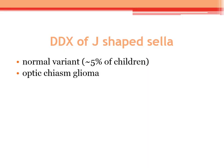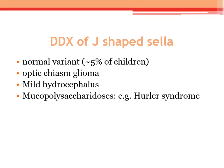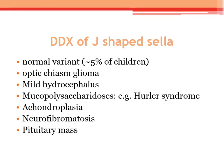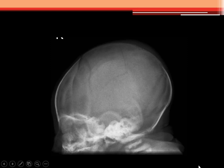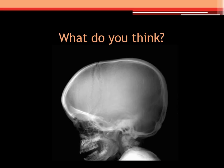There is an abnormally shaped sella, called a J-shaped sella. This is very important. The differential includes: normal variant, optic chiasm glioma, mild hydrocephalus, mucopolysaccharidoses of all types, Hurler syndrome, achondroplasia, neurofibromatosis, and pituitary mass. Should we leave the patient and say it's a normal variant, or further investigate? Further investigation is indicated, because it's only 5% likely to be a normal variant. MRI is quite indicated.